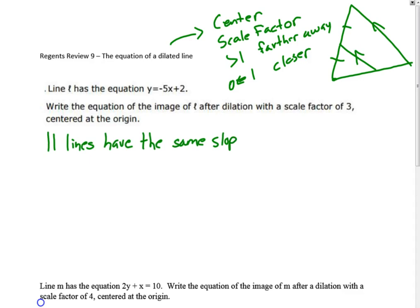We look at this question. Line L has this equation, y equals negative 5x plus 2. It's in the form y equals mx plus b. We know that m is the slope and b is the y-intercept.